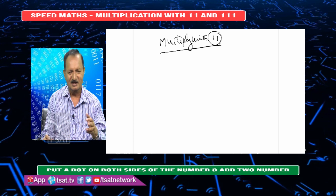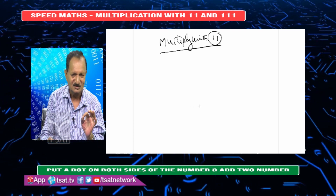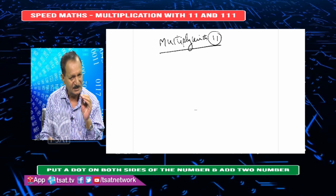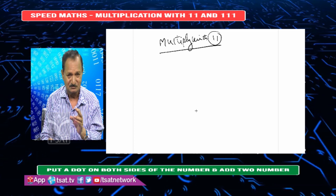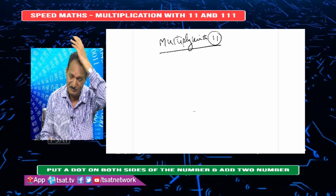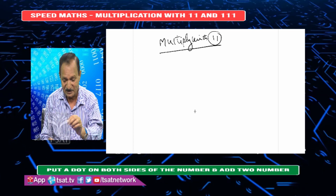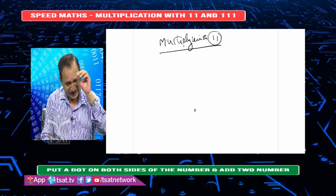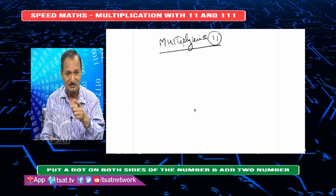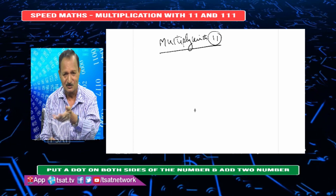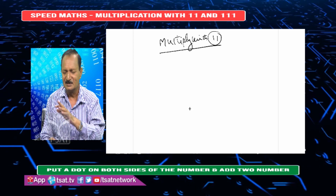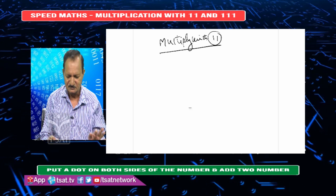In competitive examinations, every second is important. You may have 10 problems in the math paper. Each multiplication should take only a few seconds — speed math makes this possible.